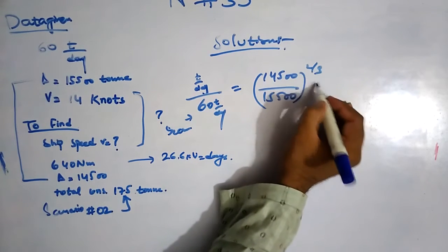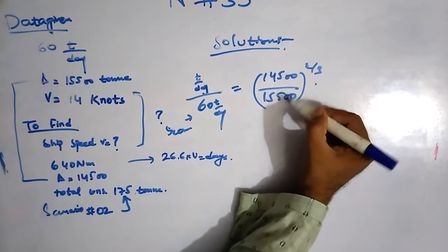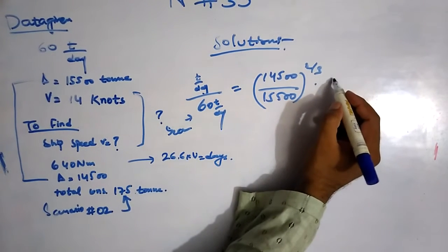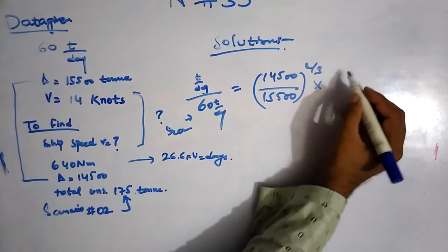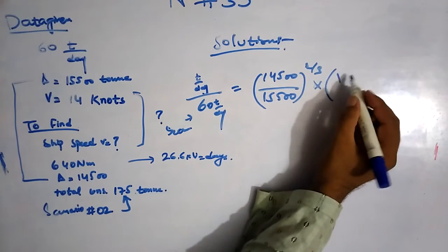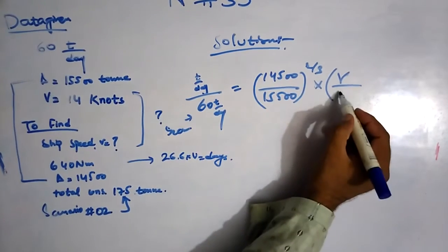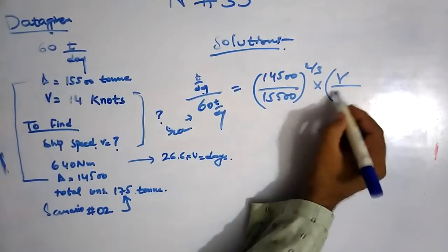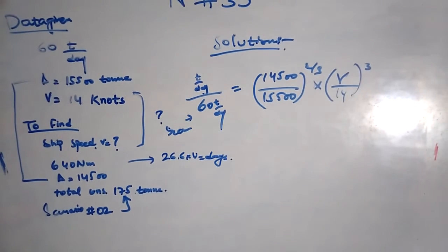This is the formula of the fuel consumption, displacement one displacement two, multiply by its velocity. We have to find V here, ship speed V, and 14 knots. Bracket close and it's to the power of three.